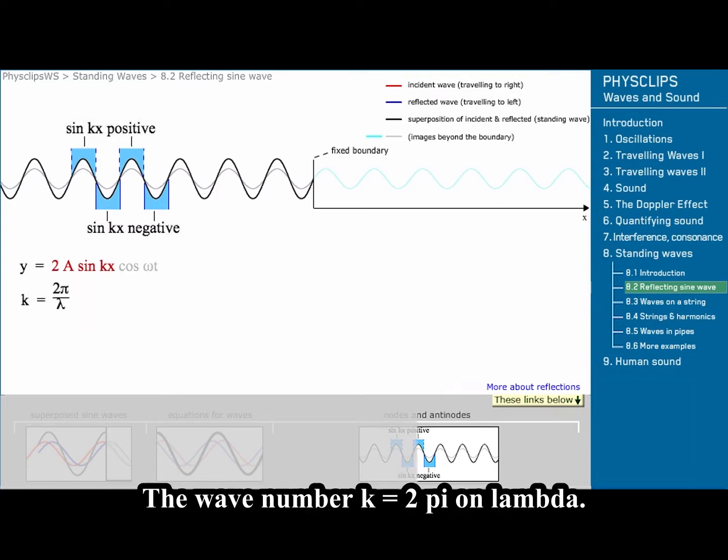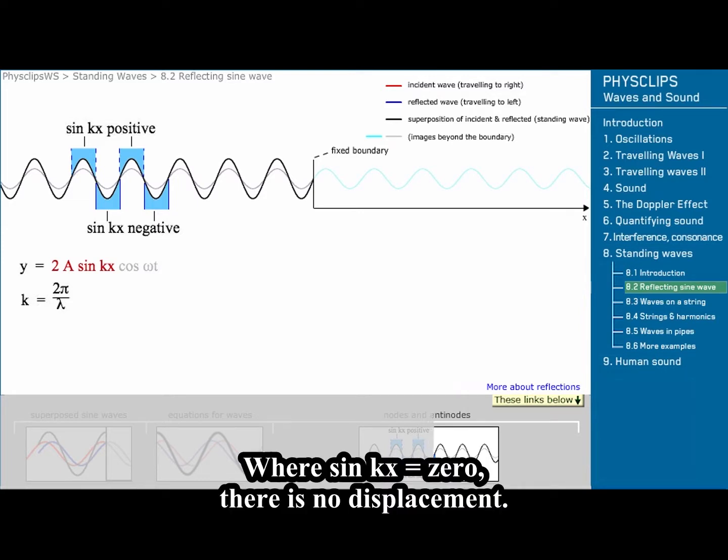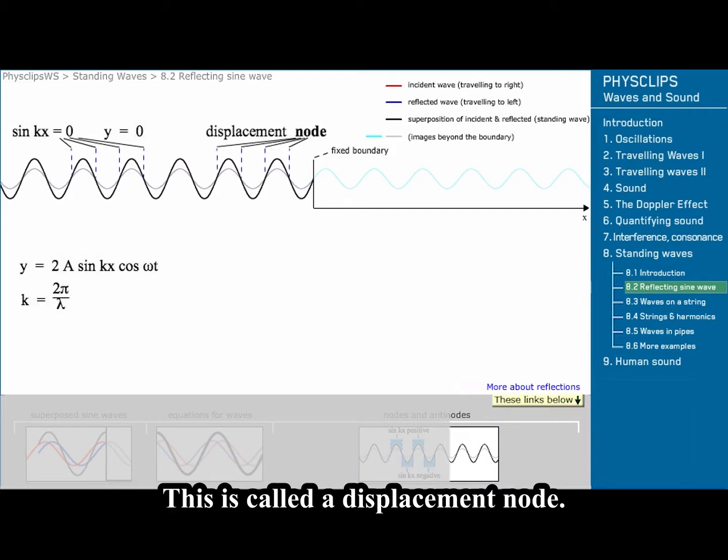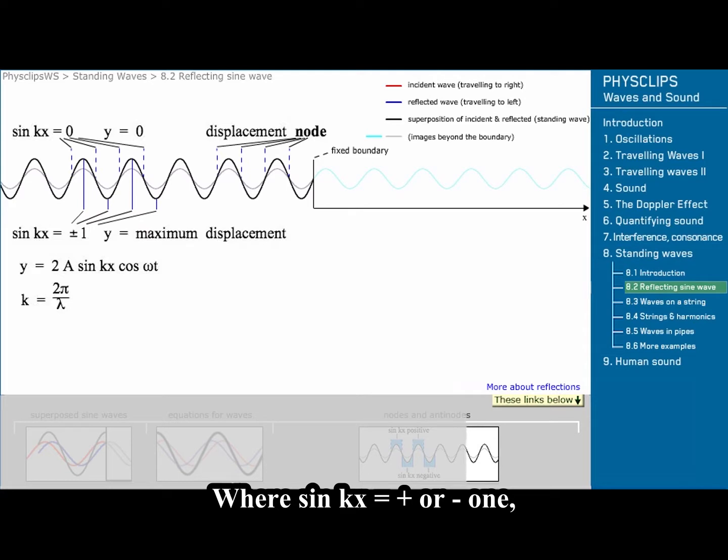The wave number k equals 2π on λ. Where sin kx equals 0, there is no displacement. This is called a displacement node. Where sin kx equals plus or minus 1, it's an anti-node.